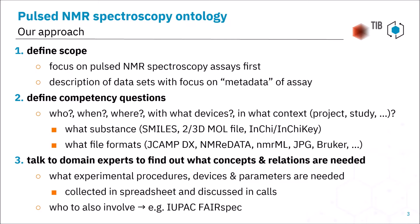Similarly to what we've just seen, we talked to domain experts to find out what concepts and relations are needed. We also start with a spreadsheet approach, collecting term labels and their definitions and discussing those in online calls to clarify them. From there we find out what terms can already be reused from existing ontologies — sometimes the labels are a little different but the concept might already be present — so first collecting all those terms, then going on the hunt using lookup services to find if they already exist.